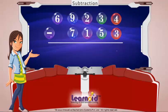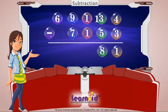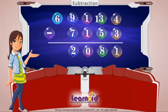4 minus 3 is 1. 3 is less than 5, so we have to borrow 1 from 2. Now 13 minus 5 is 8. 1 minus 1 is 0. 9 minus 7 is 2. 6 minus 0 is 6. The answer is 602,081.